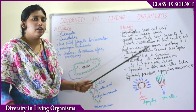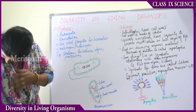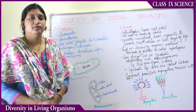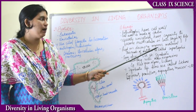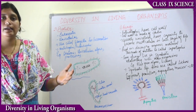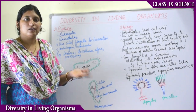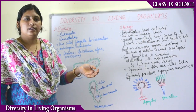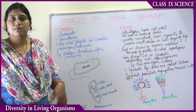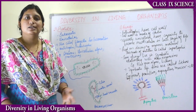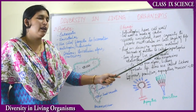Fungi are also unicellular, but they have the capacity to become multicellular. They feed on decaying organic material. Any food thrown in the garbage, over a period of months or years, decays with the help of microorganisms — that is known as decaying organic material. Some types of fungi feed on this decayed organic material.